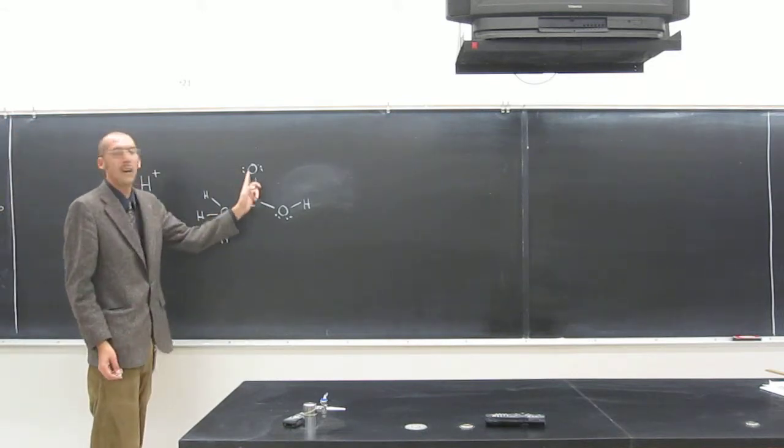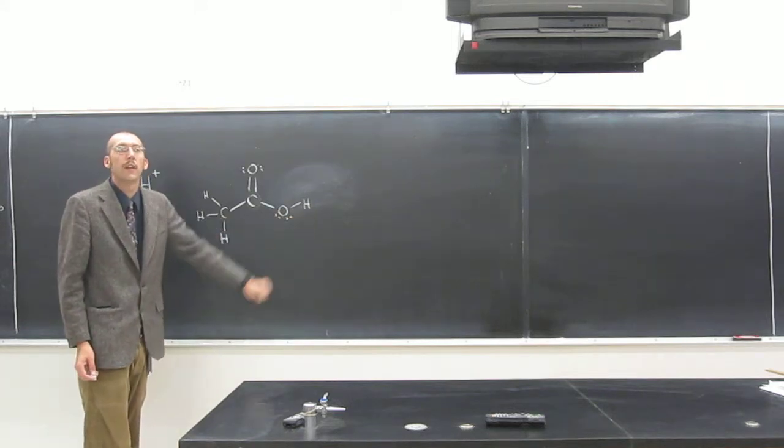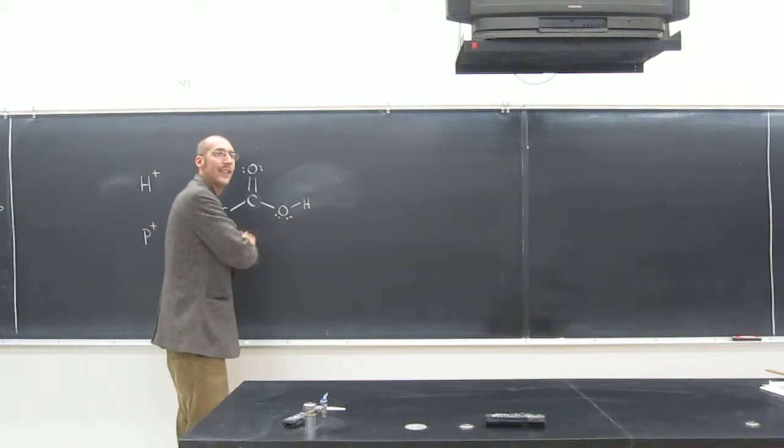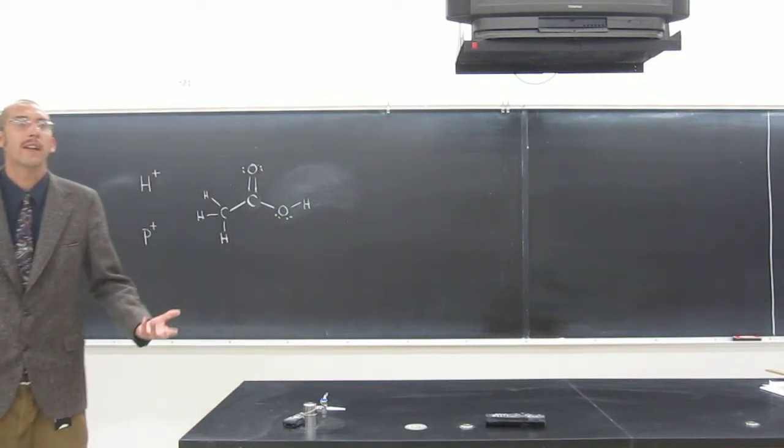Carbon, three hydrogens, carbon double bonded to an oxygen, oxygen hydrogen. This hydrogen here, so acetic acid, right, is called acid because it's acidic.